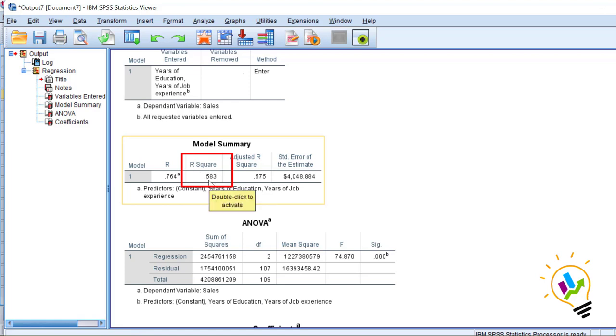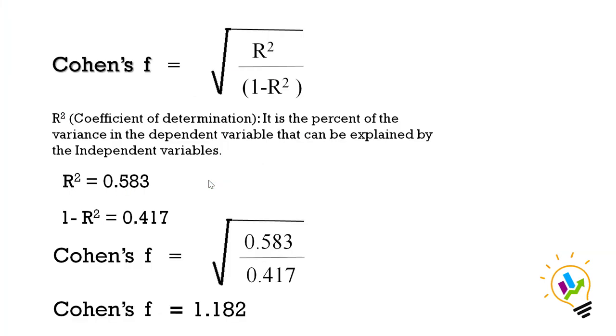Now, using this r square value, we will see how to calculate the effect size. In this equation, you can see Cohen's f formula is used. The Cohen's f formula here: the square root of r square divided by 1 minus r square.